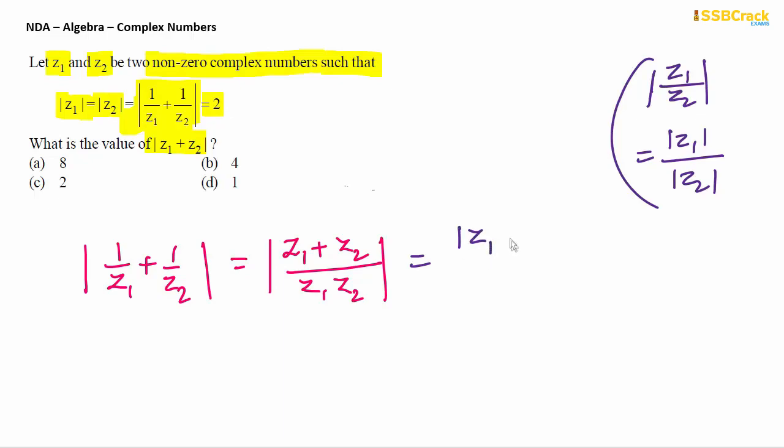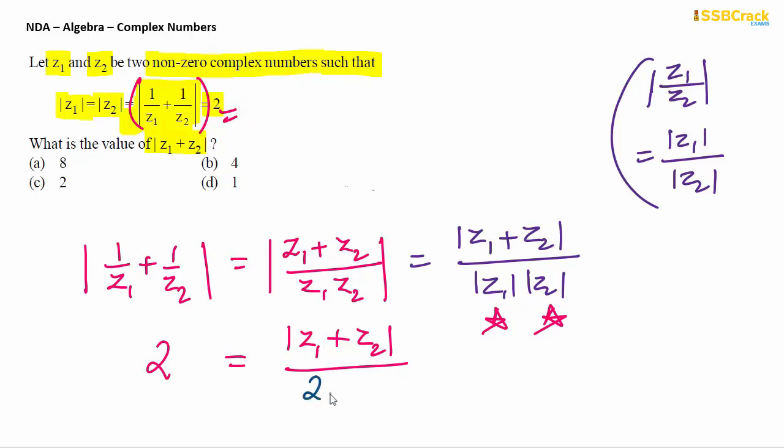So this simplification is easy. For numerator we have mod of z1 plus z2, and denominator will be mod z1 into mod z2. Now in this we know the values. What was the value of modulus of 1 upon z1 plus 1 upon z2? It was 2. So 2 equals numerator which is unknown, mod of z1 plus z2, and denominator is known in the question, both are equal to value 2.